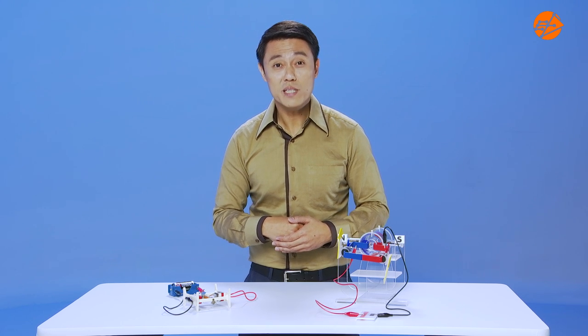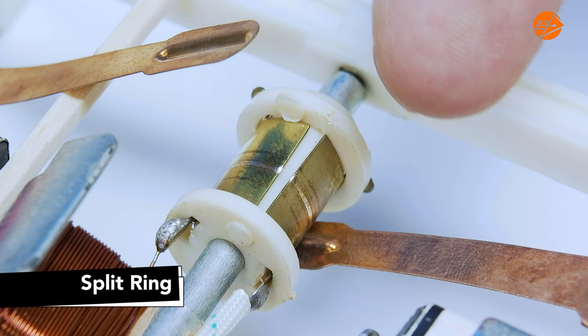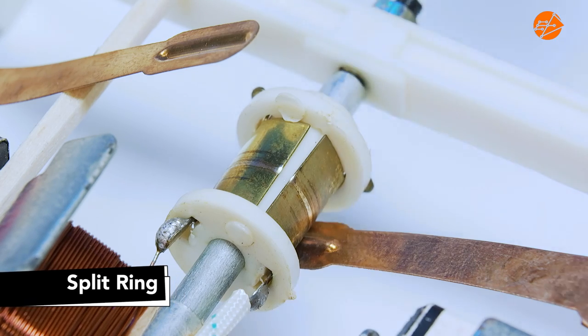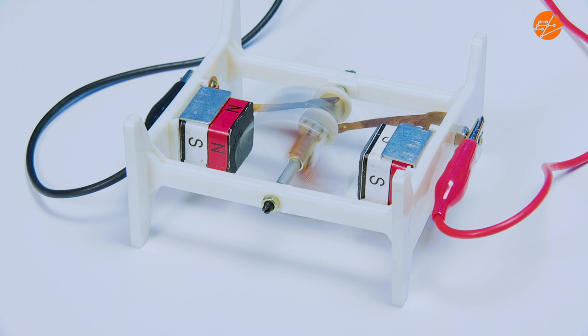Now, let's observe our DC motor setup with the split ring. The DC motor setup spins continuously.